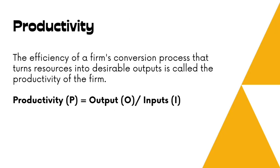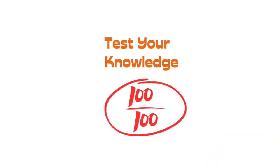There is a very important term to know when we talk about production and operations management: productivity. Productivity is the efficiency of a firm's conversion process — the process that turns inputs into value-added outputs. How efficient this conversion process is, is what productivity indicates. If our conversion process is very efficient, productivity will be high; if not, productivity will be less, and we will need more inputs to produce fewer outputs. We can express this as: Productivity = Outputs / Inputs.